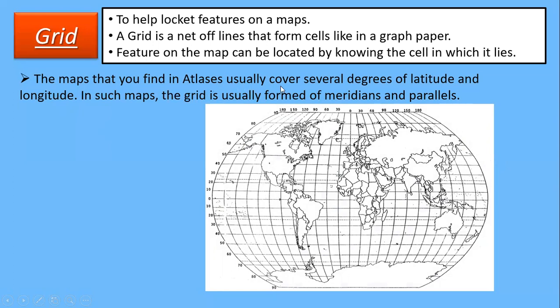The maps you find usually cover several degrees of latitude and longitude. In such maps, the grid is usually formed by the meridians and parallels — that is, latitudes and longitudes. Horizontal lines are called parallels, and vertical lines are called meridians. Latitudes are the horizontal lines and longitudes are the vertical lines. These things you have to keep in mind.